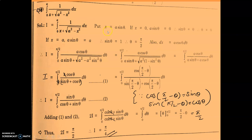Also dx equals a cos theta d theta. So the integral becomes integral 0 to pi by 2 of a cos theta upon (a sine theta plus root of a square minus a square sine square theta) d theta. That equals integral 0 to pi by 2 of a cos theta upon (a sine theta plus a cos theta) d theta, since root of a square cos square theta gives a cos theta. Cancelling a, we get integral 0 to pi by 2 of cos theta upon (sine theta plus cos theta) d theta. This is equation number 1.